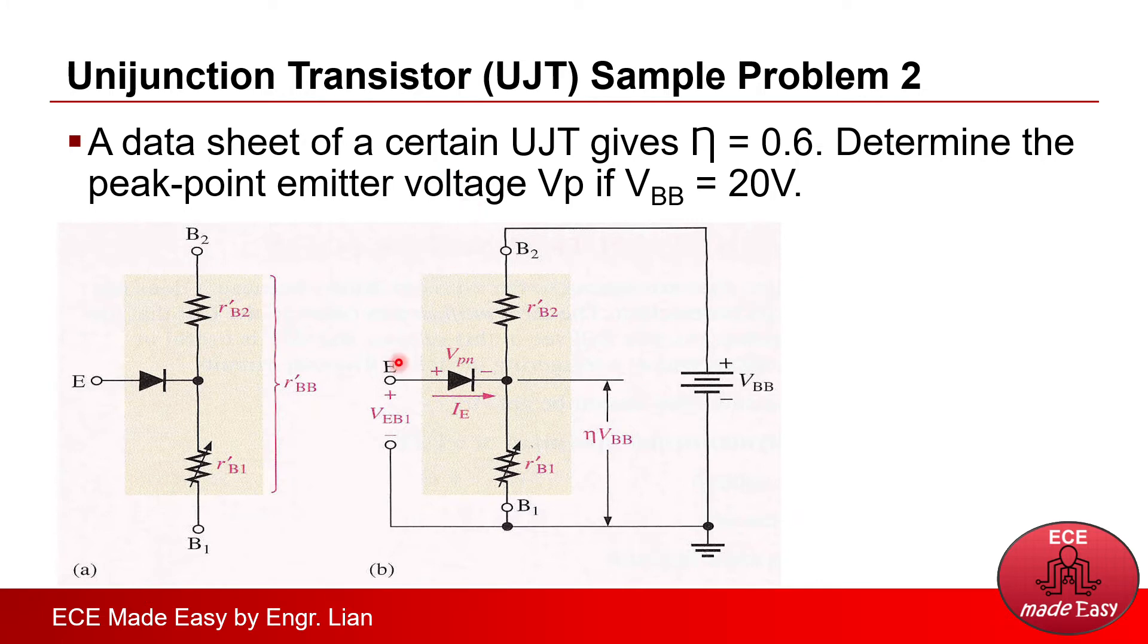Or, in this illustration, that is VE, V1, from emitter to base 1. So, we should be concentrating on the voltage loop or the current loop around this circuit.